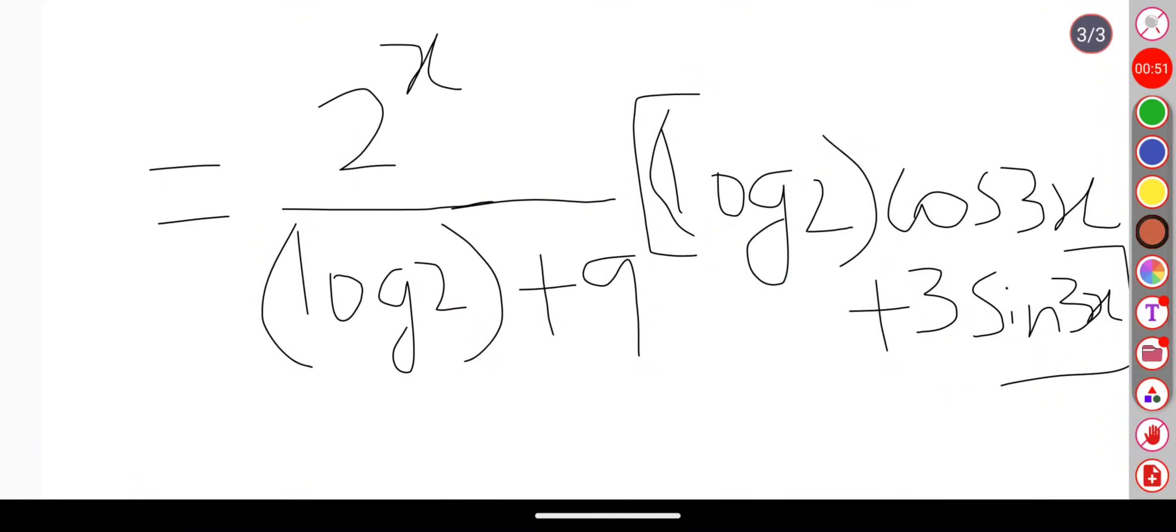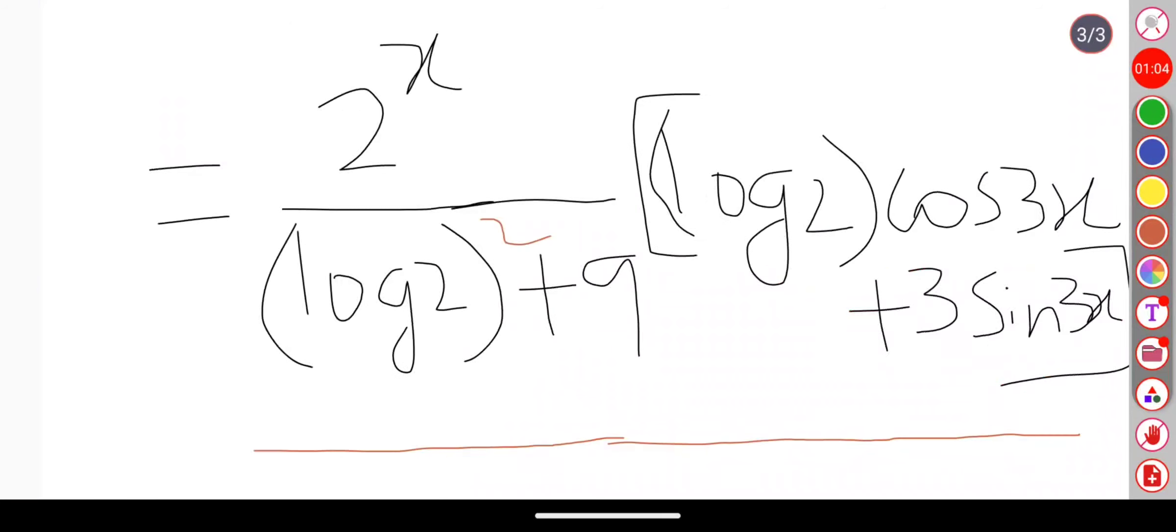I am getting my answer as 2 to the power of x by log 2 whole square plus 9 into log 2 cos 3x plus 3 sin 3x. This is the answer to this question.